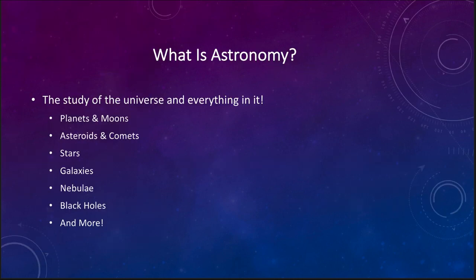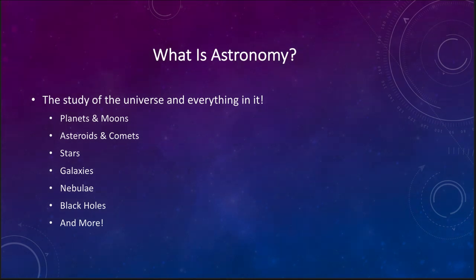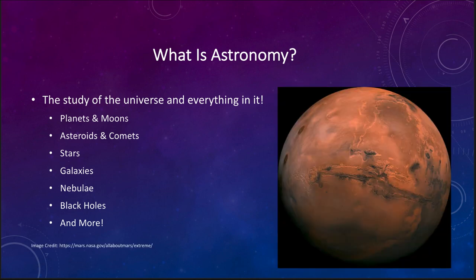What is astronomy? Most simply put, astronomy is the study of the universe and everything in it. Anything that we see in the universe is part of the study of astronomy. The list I've given here is not comprehensive — there's a lot more that could be studied. Let's start off looking at one example: a planet within our solar system.